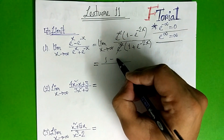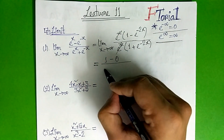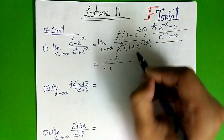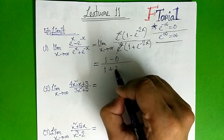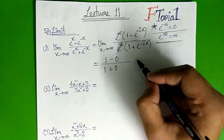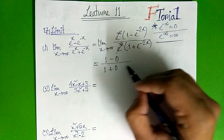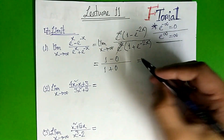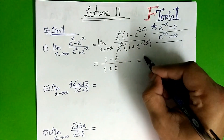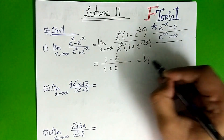So minus infinity is 0. So 0. 1 plus minus infinity is 0. So 1 minus 0. So 1 by 1. So the ultimate result is 1.